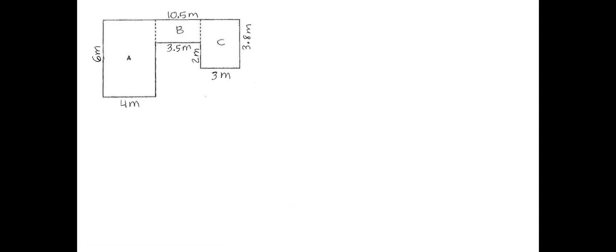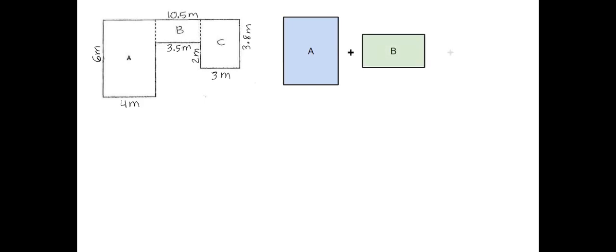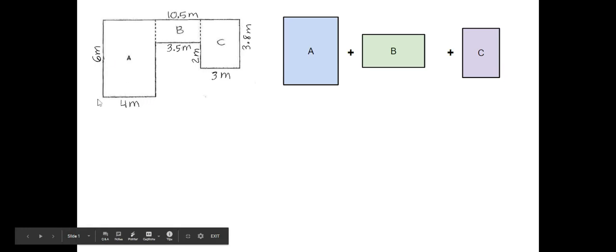So example one — this is made up of three rectangles: rectangle A, rectangle B, and rectangle C. And as always, we always want to make sure that we label each of the rectangles. A is pretty easy.